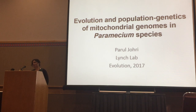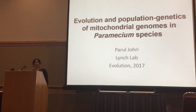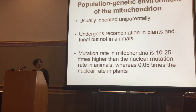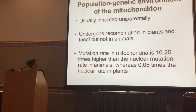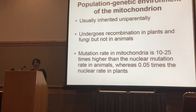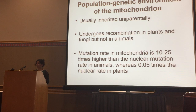We now have multiple insights about mitochondria. For instance, we know that they are maternally inherited. The mitochondria undergo recombination in plants and fungi, but not in animals. The mutation rate in mitochondria is 10 to 25 times higher than that in the nucleus in animals, but much lower than the mutation rate in plants.